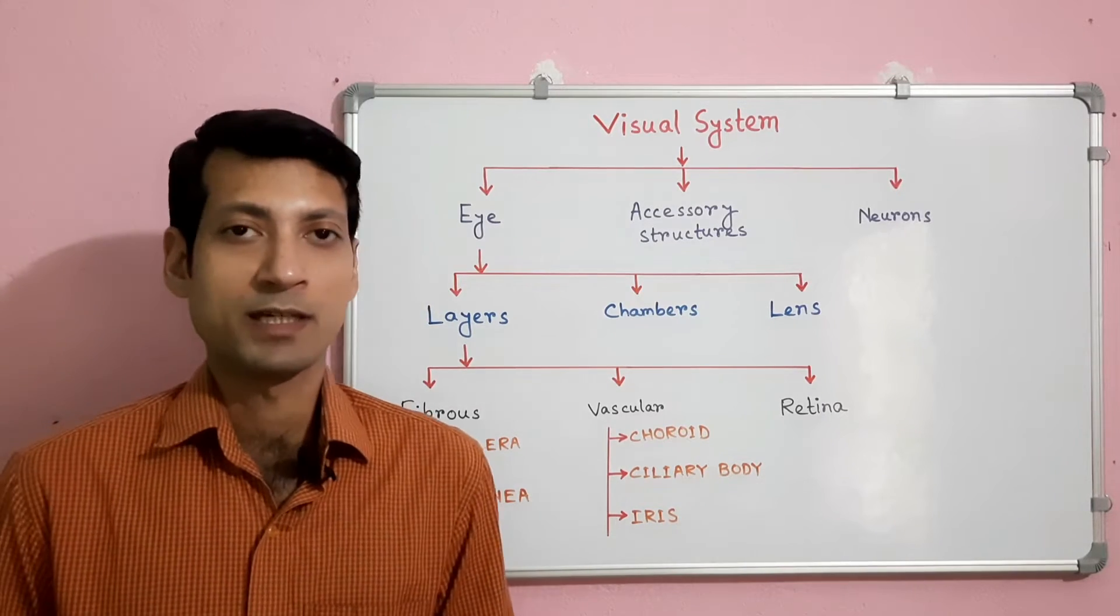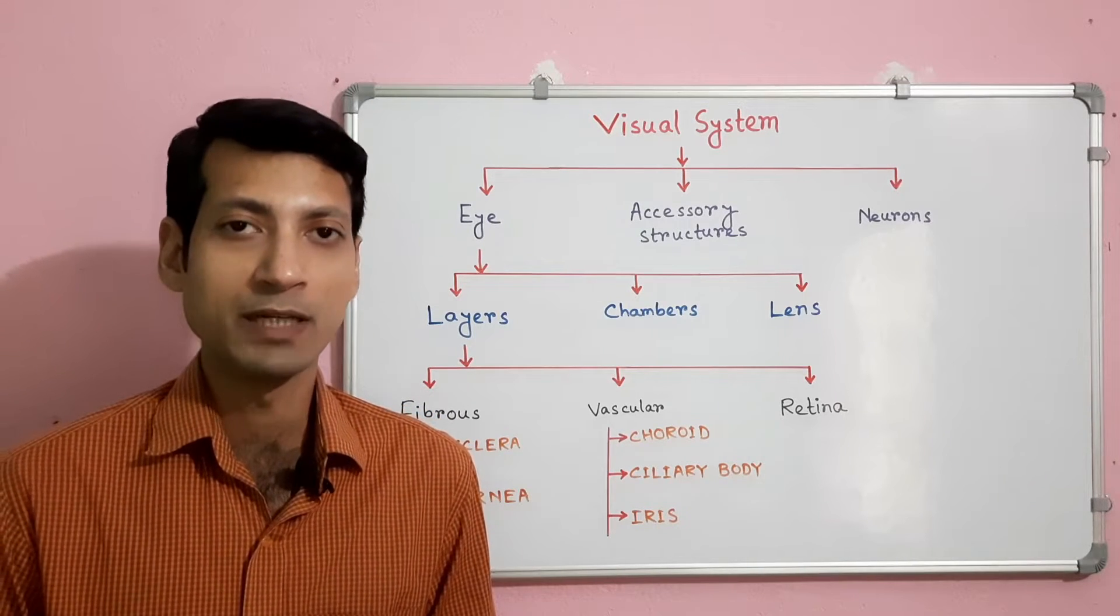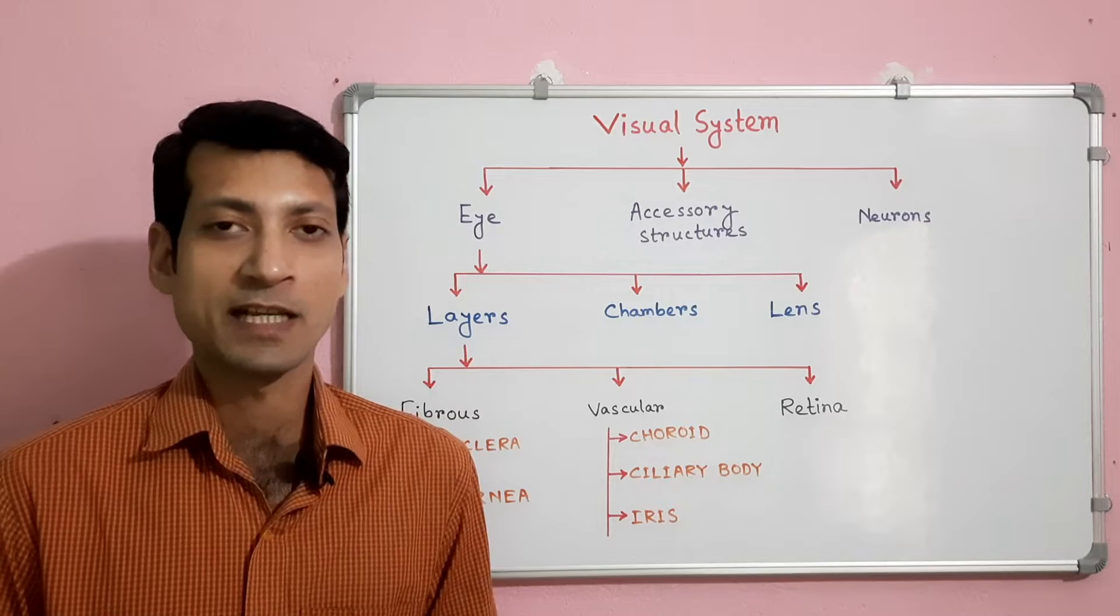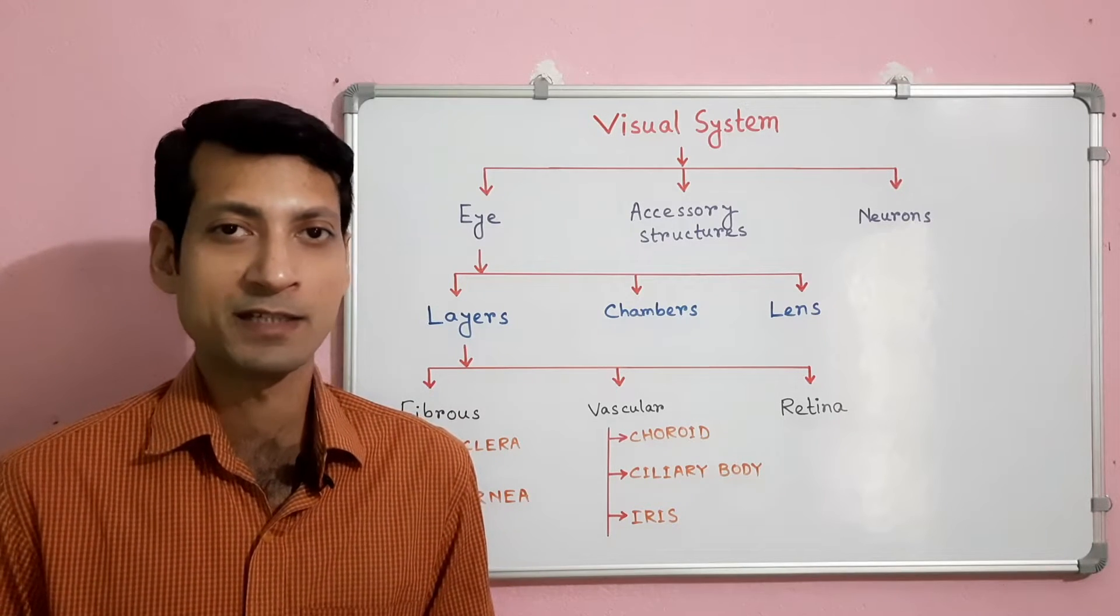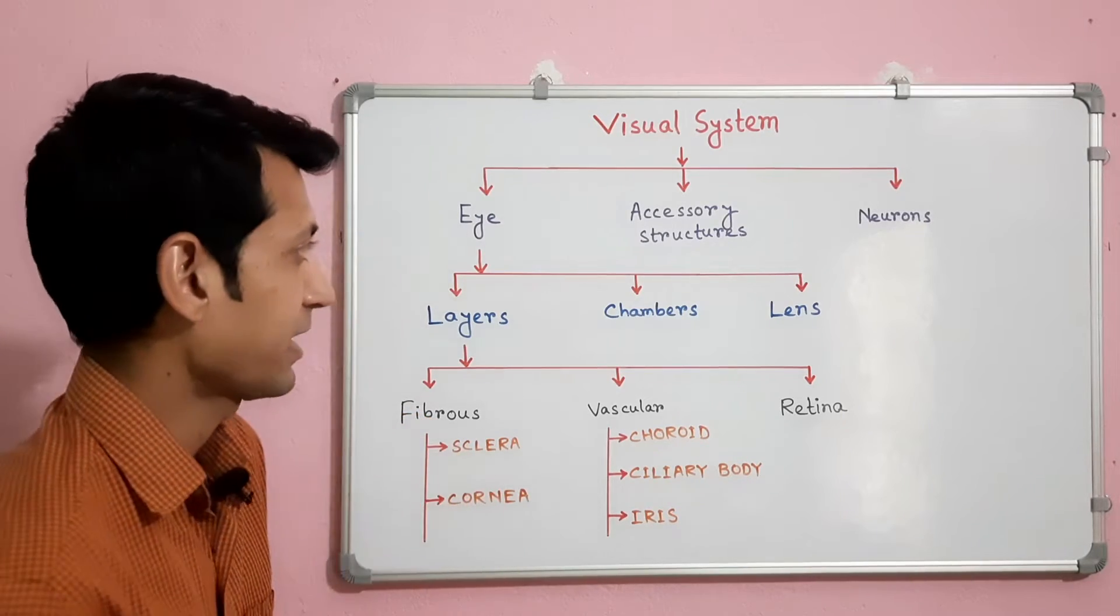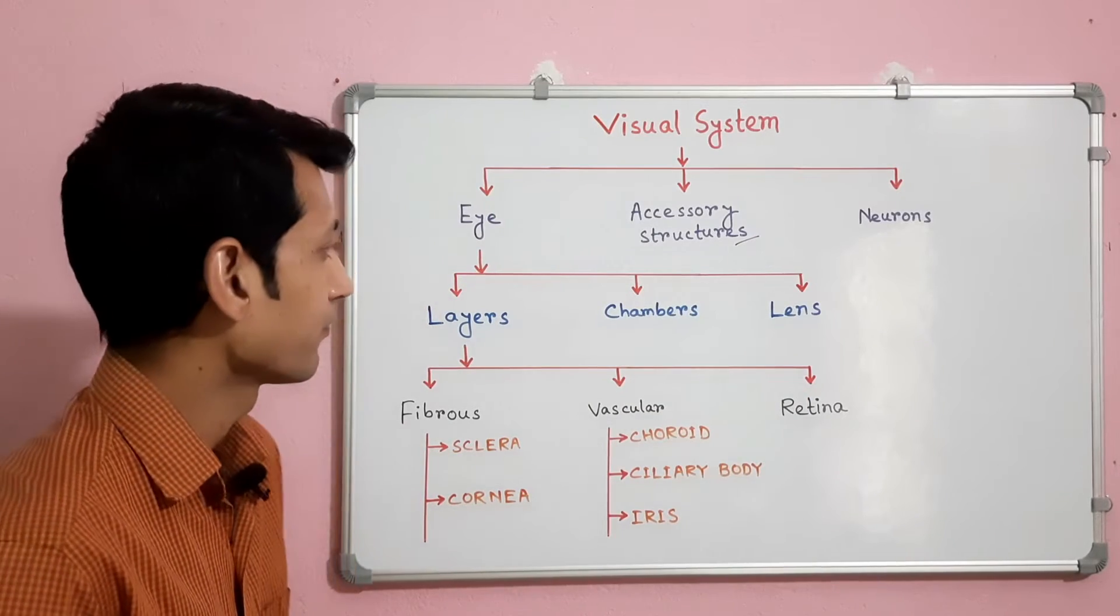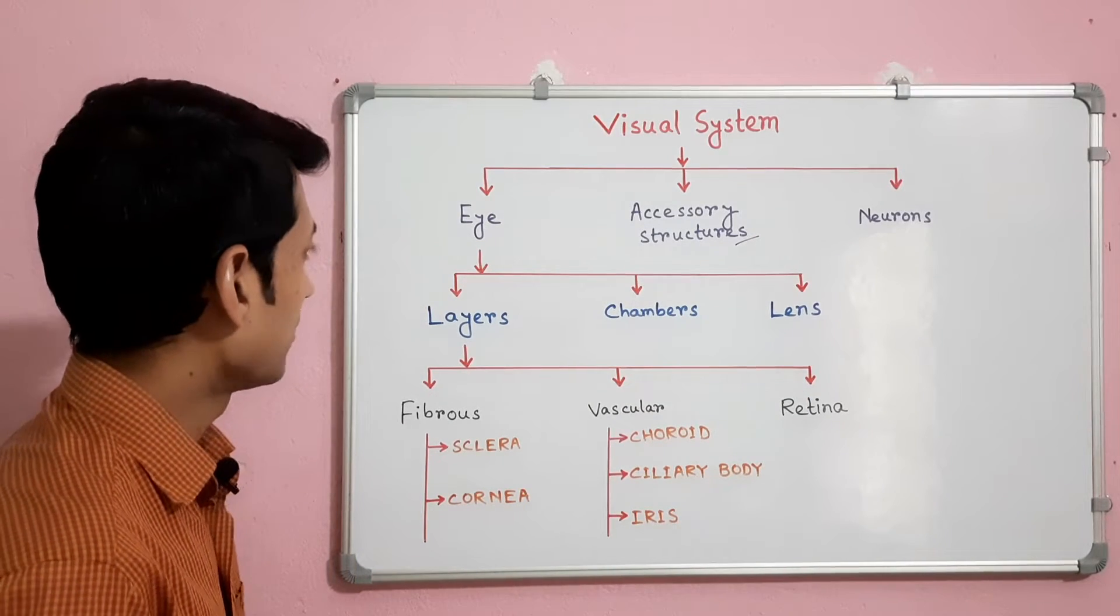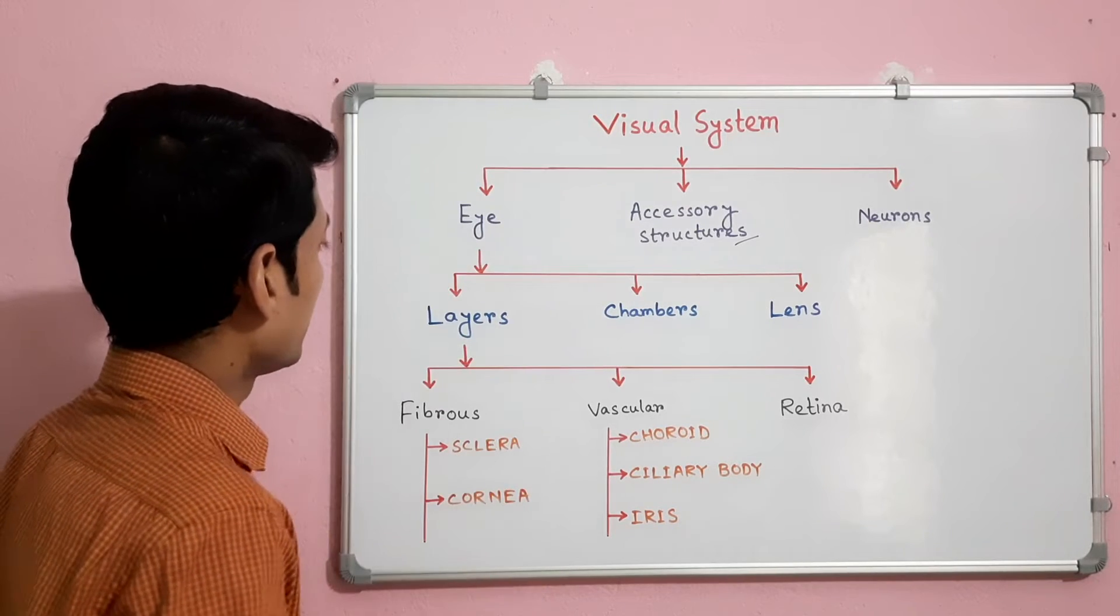The diameter of the eye measures approximately 25 mm. It is suspended in the bony orbital socket by extensive muscles. In the last video I had already discussed the different accessory structures of the eye. So today I will discuss the general structures of the eye.